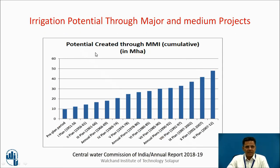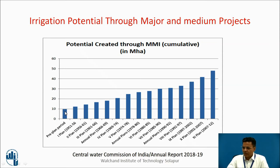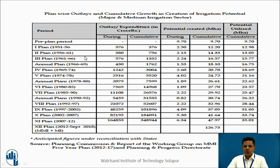This graph gives us the idea about the irrigation potential developed through major and medium water resources projects. In the pre-plan period there were just 10 million hectares of land receiving irrigation water. By 2012 we have reached up to 48 million hectares of irrigation potential created. Cumulatively, by end of 2012, 35.01 million hectares of irrigation potential is created and utilized.